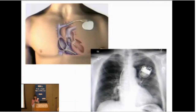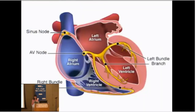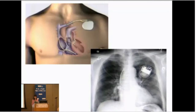To explain biventricular pacing: this individual had a pacer with a lead placed in the left ventricle and a lead in the right ventricle that could coordinate how the left and right ventricle work together and improve heart function.